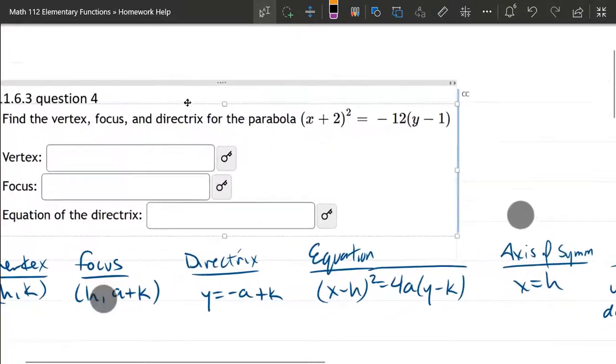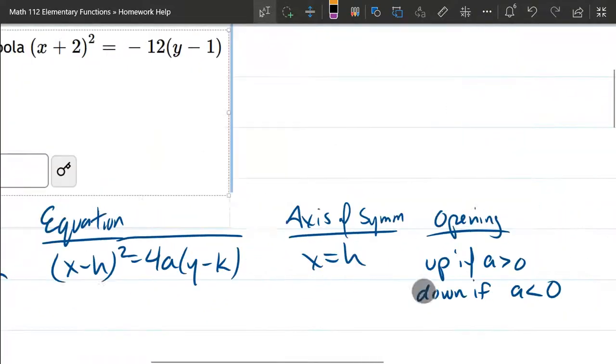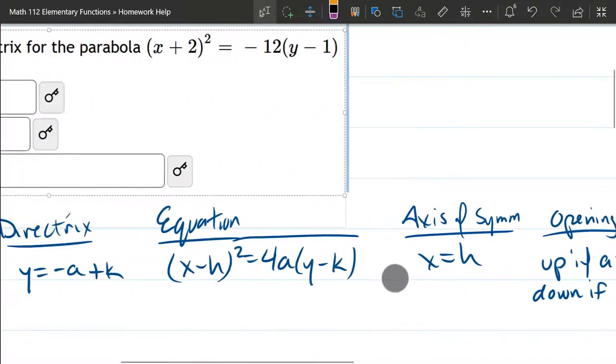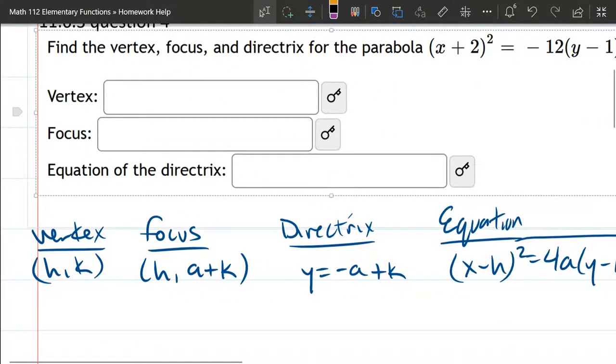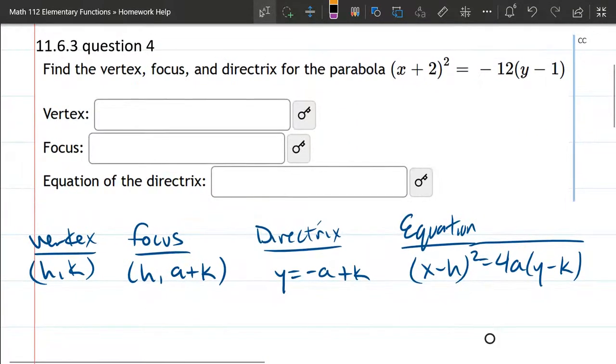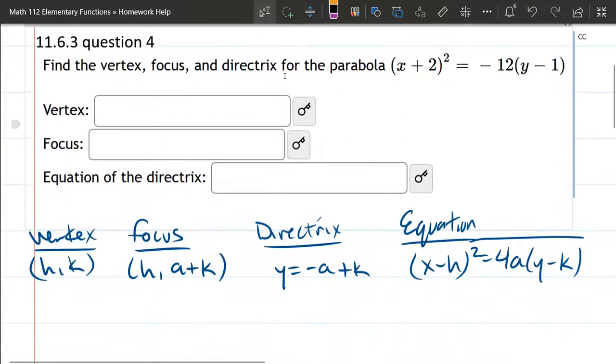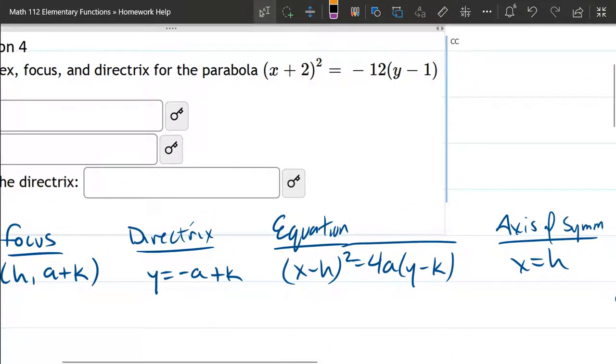Alright, so now that we have all this information written down, we didn't have to answer anything about axis of symmetry or where it's opening, so I'm going to push that off the screen. That's not relevant for us. What did we start with? We started with the equation. So what I'm going to do is write our equation right below this equation, just copying it exactly off the top.